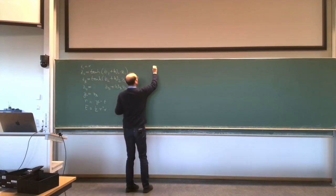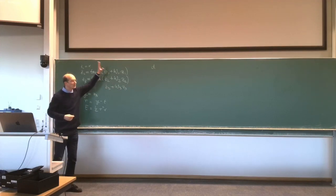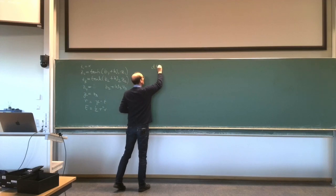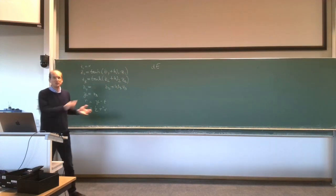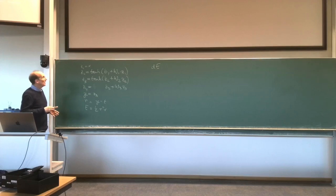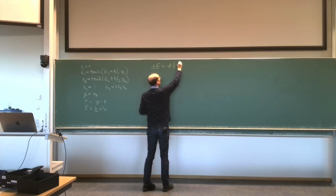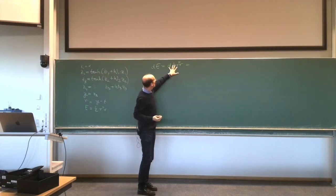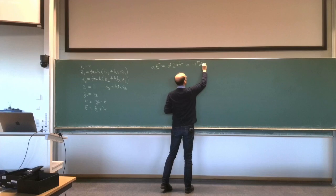Let's write out the differential. We want the derivative of E with respect to all parameters, so we do it backwards — starting at the end. We are interested in dE. Plugging in the definition: d of (one-half R-transpose R). This is like a squared function, yielding R-transpose dR. So the first result is R-transpose dR.